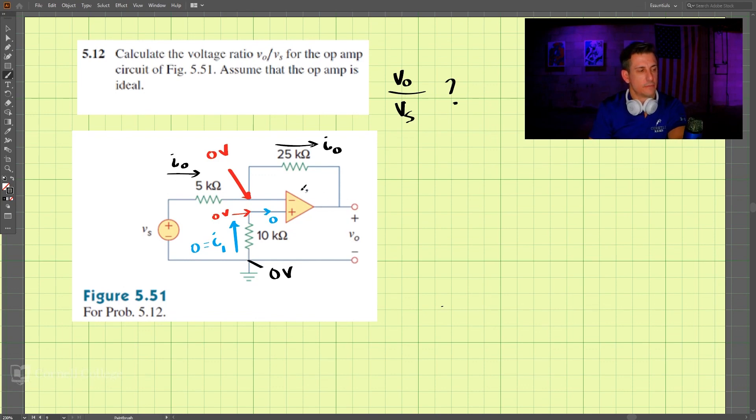So this current here, using KCL and Ohm's Law, we have VS minus 0 volts over the resistance, 5 kilo ohms, that is this current, which is then equal to this current, which is 0 volts right here, minus Vout or V0 divided by 25 kilo ohms.